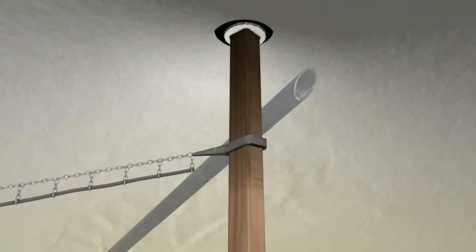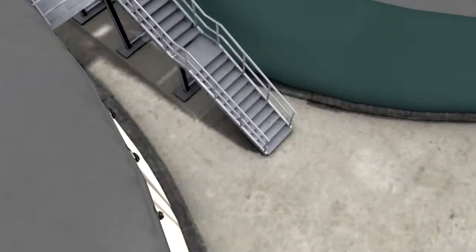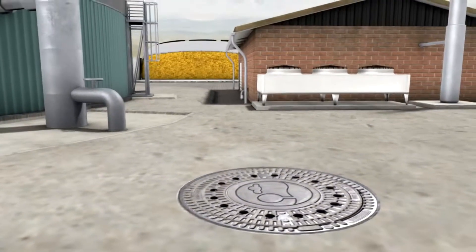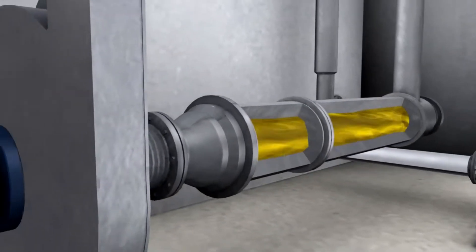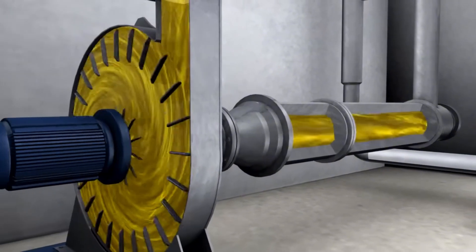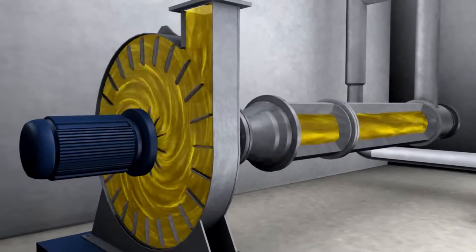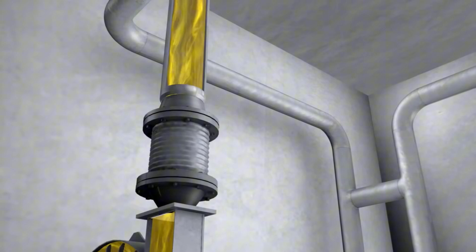The biogas arising in the fermenter enters a connecting gas line where the gas is simultaneously cooled and dehydrated. The biogas is constantly monitored for quality through a gas analysis system. Afterwards, it enters the gas compressor. The gas compressor increases the pressure so that the gas can be used in the CHP.